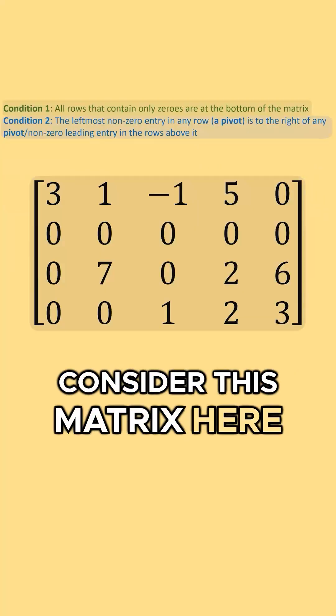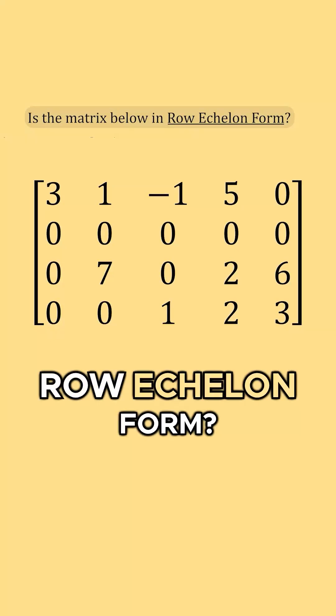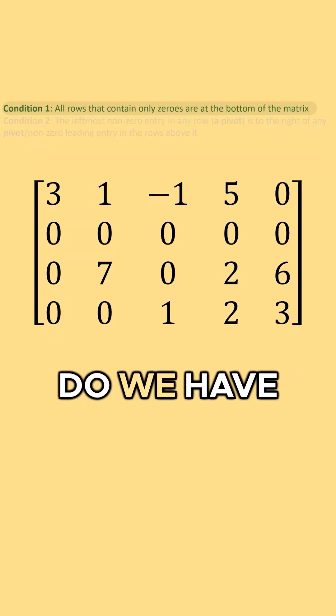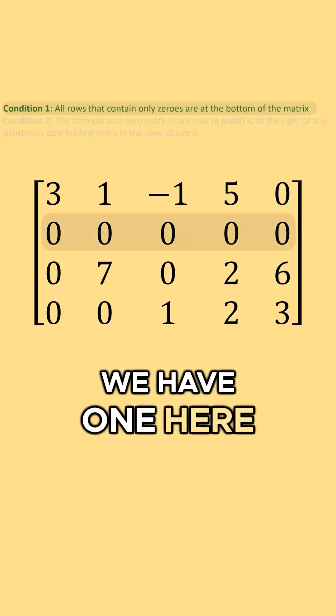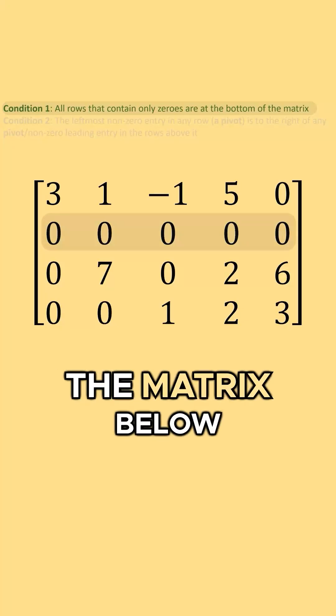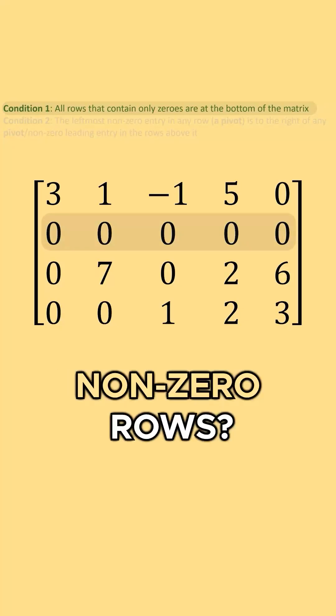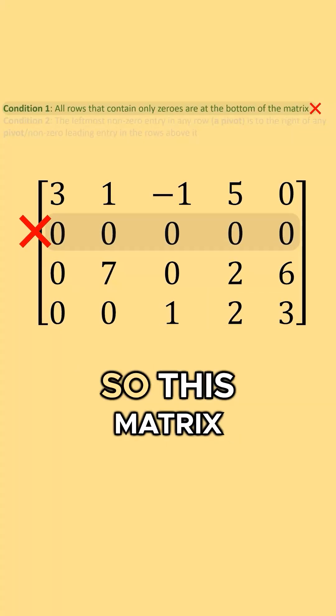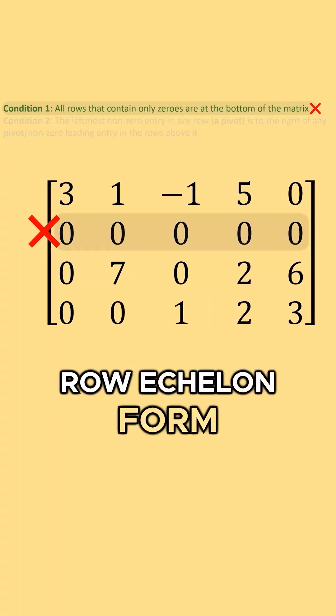Consider this matrix here. Is it in row echelon form? Well, do we have any rows with all zeros? It looks like we have one here. Is it at the bottom of the matrix, below all of the other non-zero rows? No. So, this matrix is not in row echelon form.